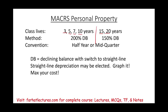For 3-, 5-, 7-, and 10-year assets, we use the 200% double declining balance method. For 15- and 20-year assets, we use the 150% declining balance. You don't need to memorize the formulas because the IRS provides the depreciation tables with the rates already computed.